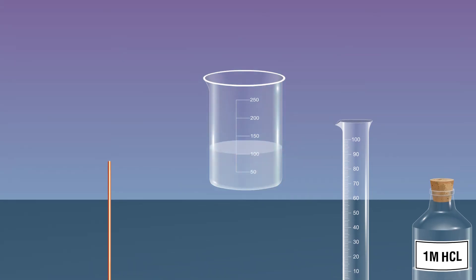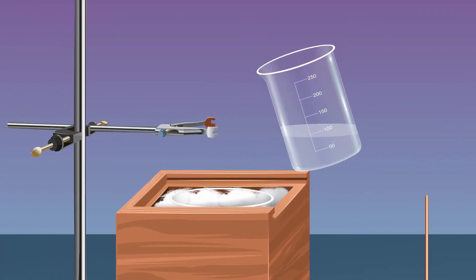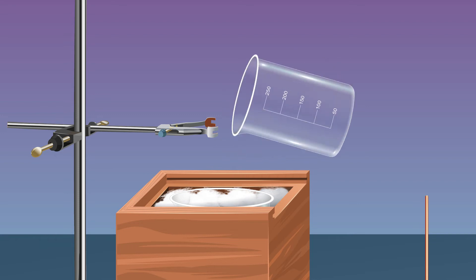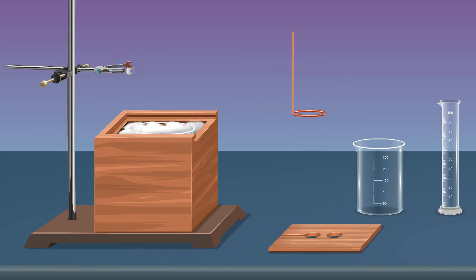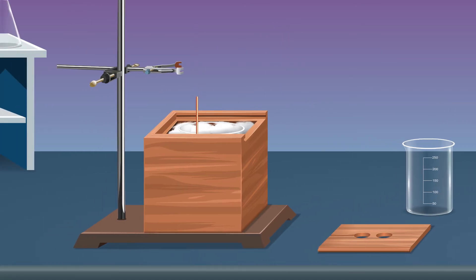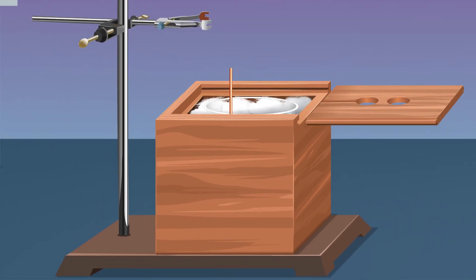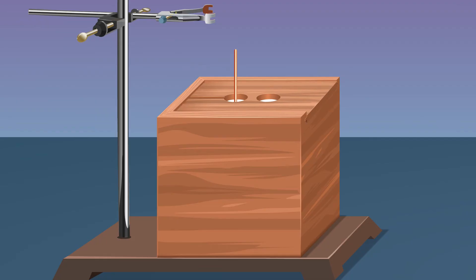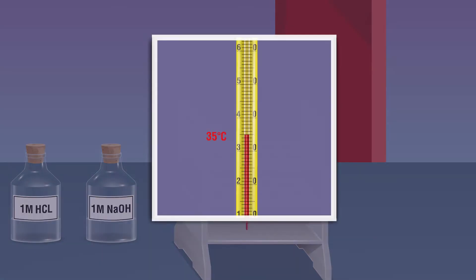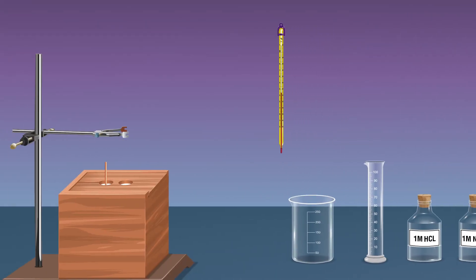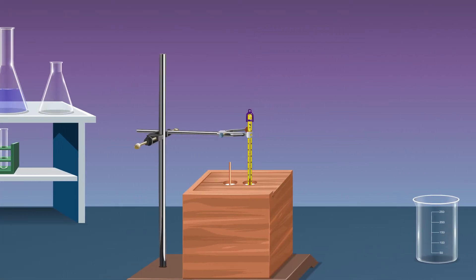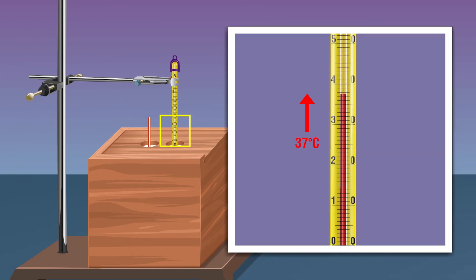Now pour the sodium hydroxide solution into the calorimeter that contains 100 milliliters of HCl. Place the stirrer inside the calorimeter, close it, and stir the mixture well. Measure the maximum temperature of the reaction mixture and note it as the final temperature T2 degrees Celsius.